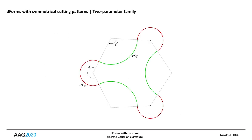Each cutting pattern consists of 2n arcs, but only two are different. Let's call them A-alpha and A-beta. For the assembly, A-alpha corresponds to A-beta. The D-form is therefore a constant Gaussian curvature surface, since A-alpha and A-beta have constant geodesic curvature.